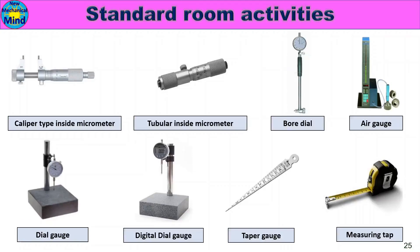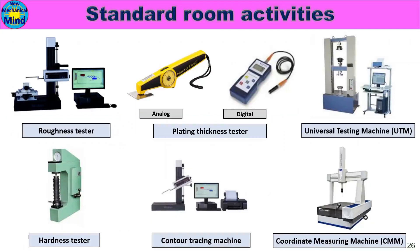Bore dial, air gauge, dial gauge, digital dial gauge, paper gauge, measuring tape, roughness tester, plating thickness tester, analog/digital, universal testing machine (UTM), hardness tester, contour tracing machine, coordinate measuring machine (CMM).